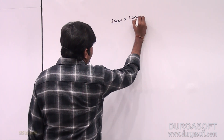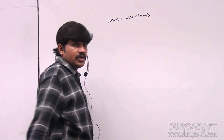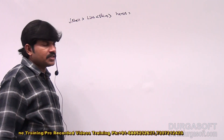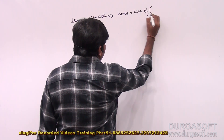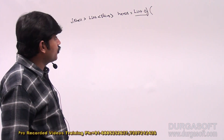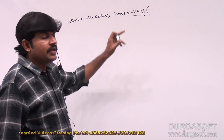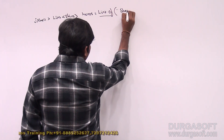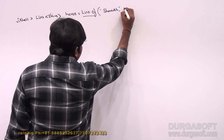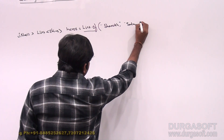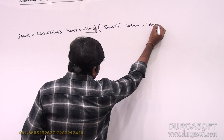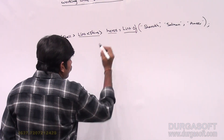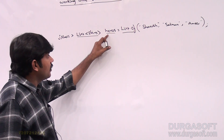From the JShell console I want to create a list of strings called heroes. I'm taking List<String> heroes = List.of() — using factory methods to create collection objects very easily. I can add hero names like Sharuk, Salman, Amir. So I'm creating a list of string objects and the name of that list is heroes.